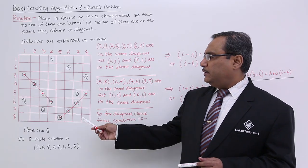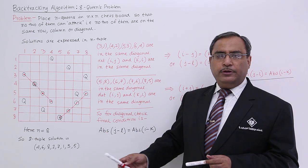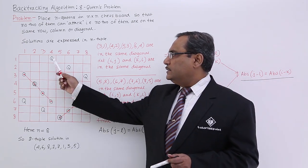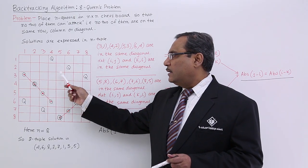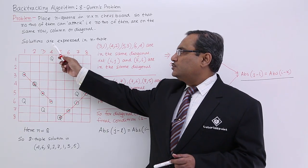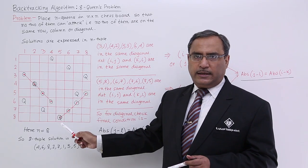we are having this particular chess board with the size 8 cross 8. And we already discussed that there is one solution that is queen number 1 at the 4th column, queen number 2 at the 6th column and so on. And I told you that this particular solution must be expressed in n tuple. So here it will be 8 tuple.